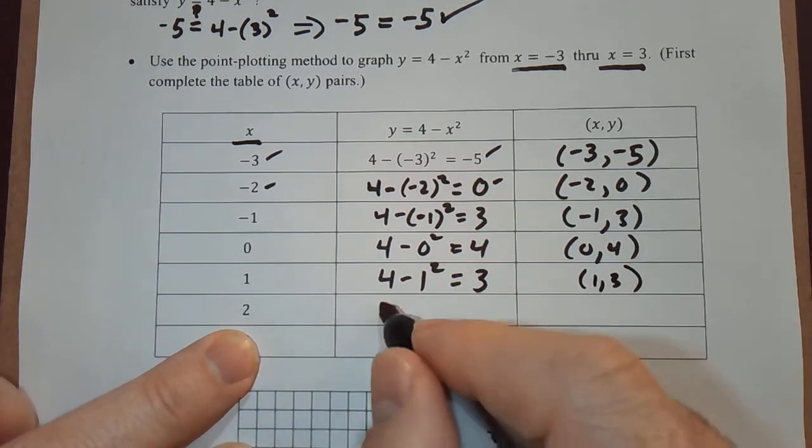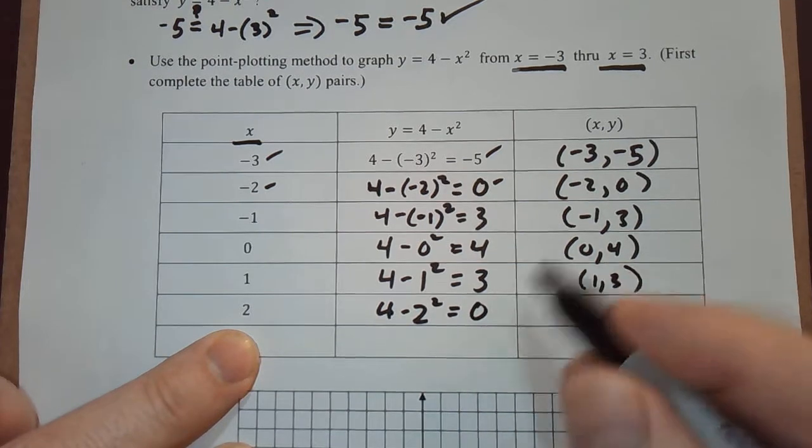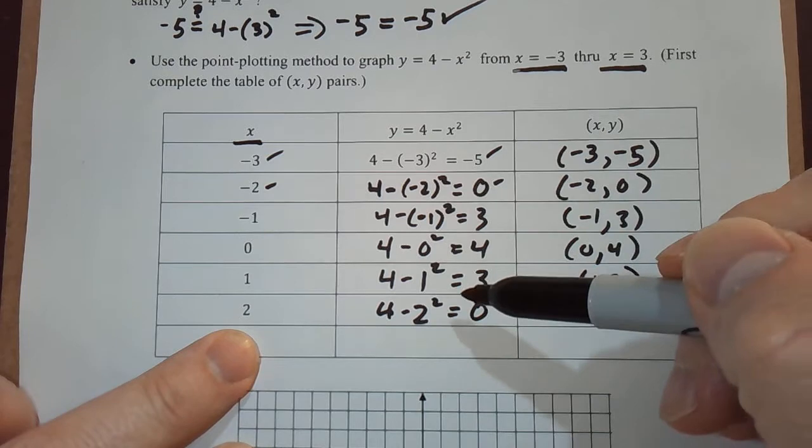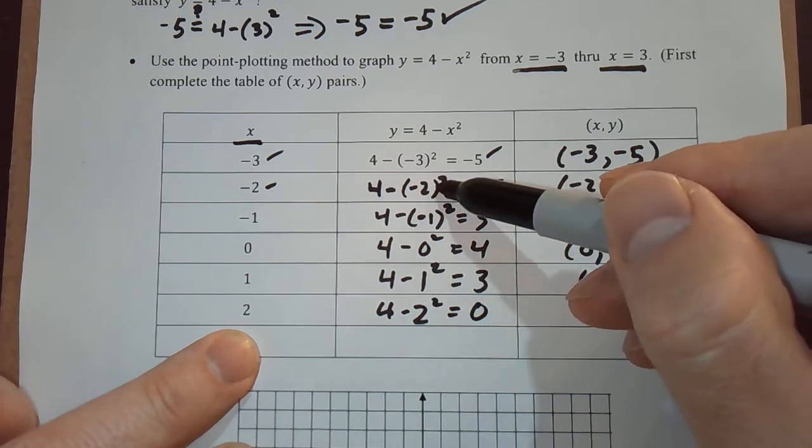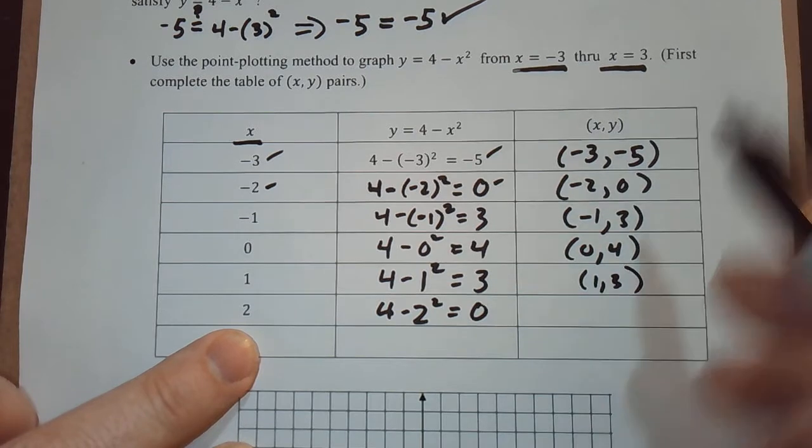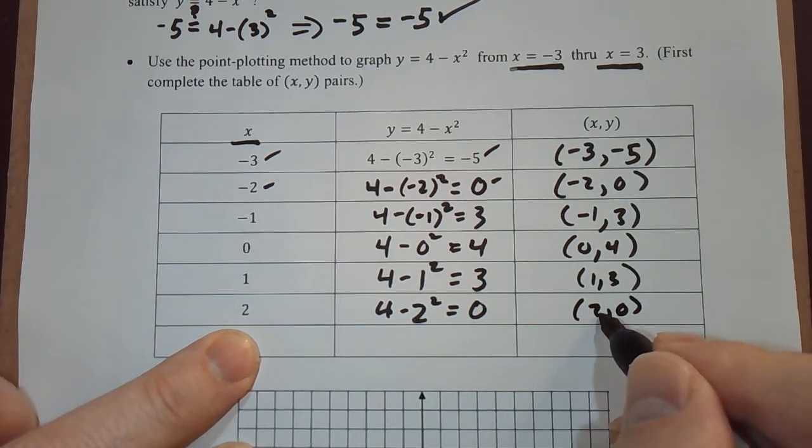Plug in 2, I get 4 minus 2 squared. That is 0. It shouldn't be a surprise because we already computed 4 minus negative 2 squared is 0 as well. Negative 2 squared and 2 squared is the same number. It's 4 in both of those cases. So 4 minus 4 is 0. 2 comma 0.